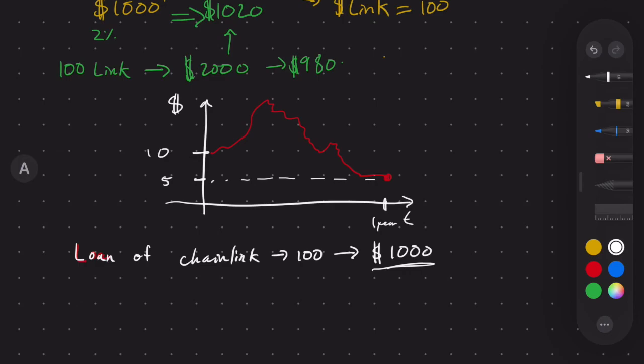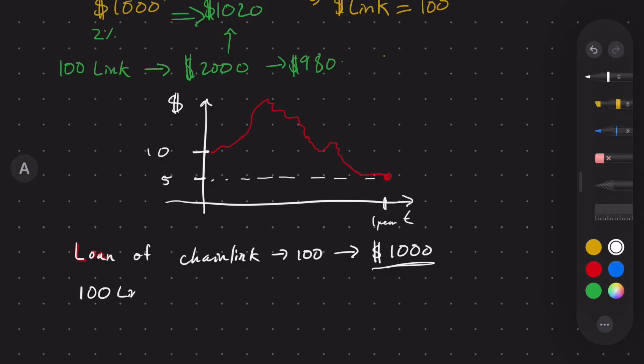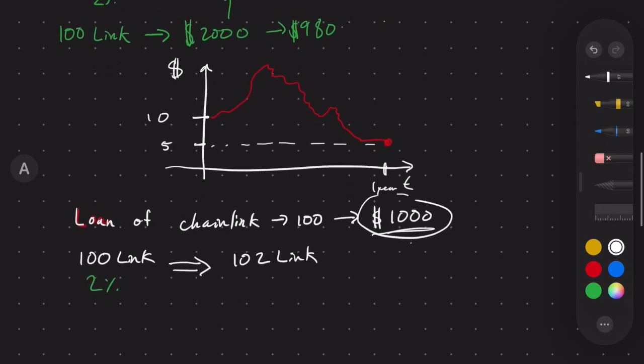So remember, we took out a Chainlink loan. We took out 100 LINK and don't forget our 2% interest. And so that means that I owe at the end of the year 102 LINK. So I get to the end of the year, I have my $1,000 in my pocket because I immediately took my Chainlink and put it into dollars. So I take that $1,000 and I repurchase it at $5 per LINK, which means that I can buy 200 Chainlink. And then I repay my loan, so I subtract 102, which leaves me with 98 Chainlink because I shorted this situation.